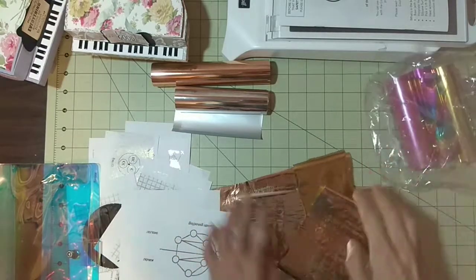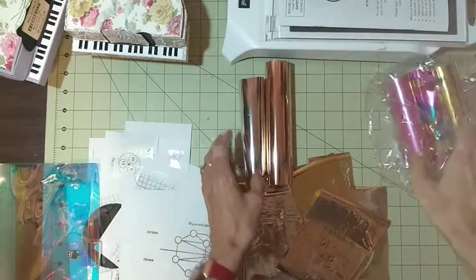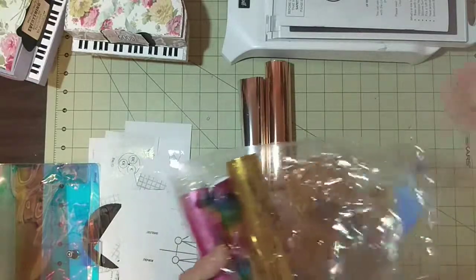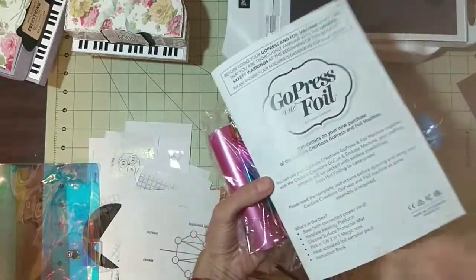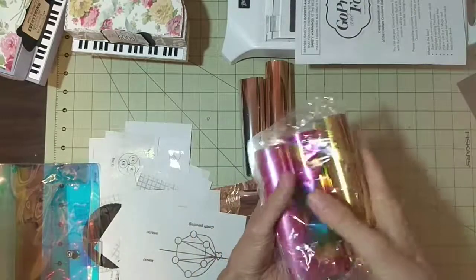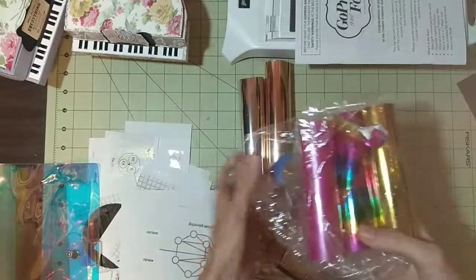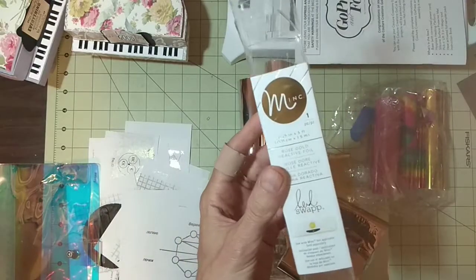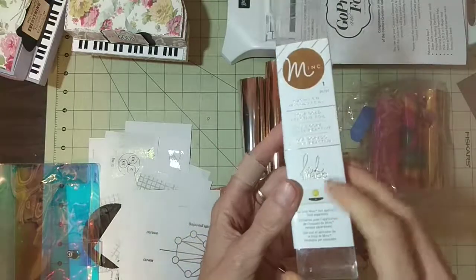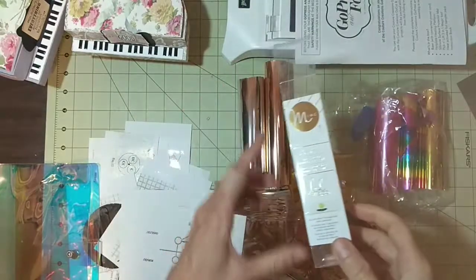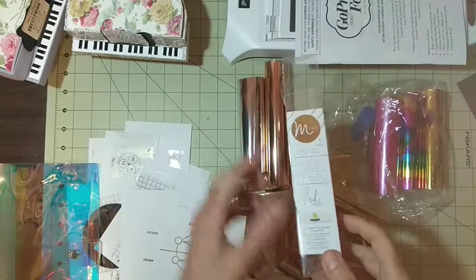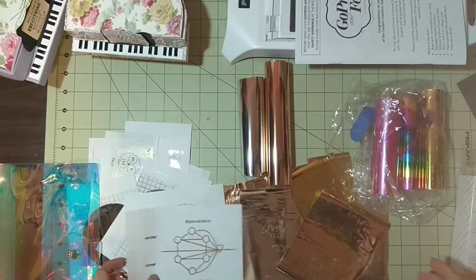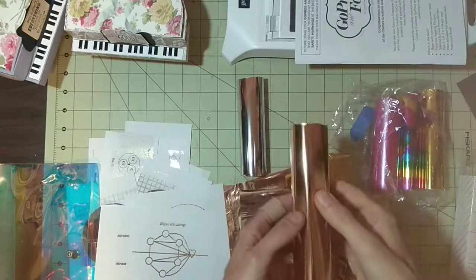So I wanted to compare two types of foil. One foil came with the Go Press machine, and another one is Minc. It's Heidi Swapp and it comes in a smaller version, six inches, and I have another one for twelve inches. I would say that I like the most Heidi Swapp.